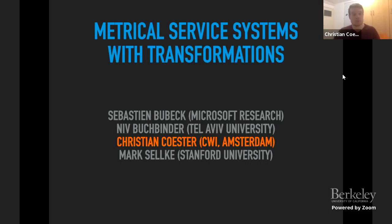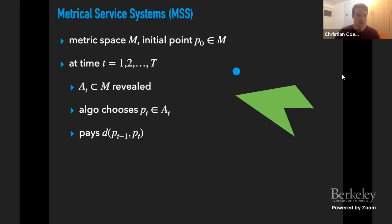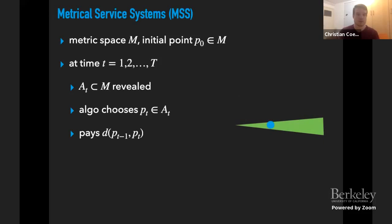Before I introduce this new problem, I will give you the definition of an old problem called Metrical Service Systems. In this problem, we have a metric space M and some initial point P0 in the metric space. At every discrete time step, some set is given to the algorithm — some set AT, which we call the feasible region — and then the algorithm has to move this point to this region. The cost of the algorithm is just the distance traveled by this point, which we can also call the state of the algorithm.